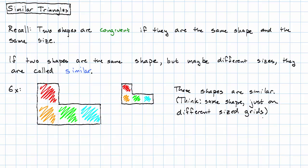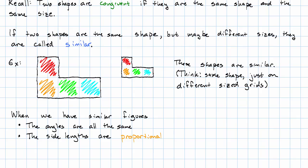When we have similar figures, the angles are all the same, and the side lengths might be different, but they're proportional.